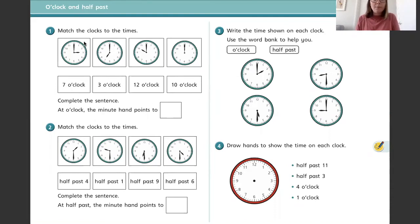Question one - match the clocks to the times. So here you have got some analog clocks showing you different times. They're all o'clock and half past because that's all we're going to focus on today. And here you have got the digital, where you've got the times written down in o'clock and you need to match them up. So have a look at the minute hand. Where is the minute hand pointing to? Is it pointing to the o'clock or is it pointing to half past?